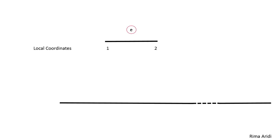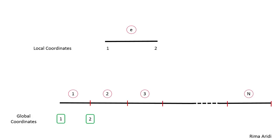Now suppose that we have these sub-elements from element 1 through element n. Here are the global coordinates going up to n plus 1. Within each element, there is a local coordinate 1 and 2 for each element.